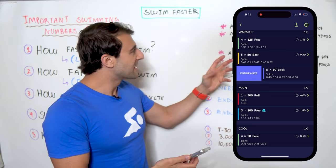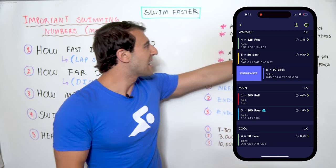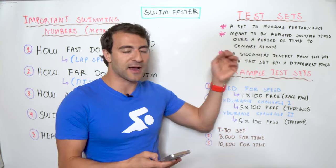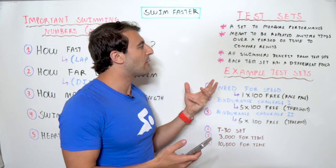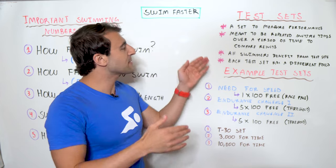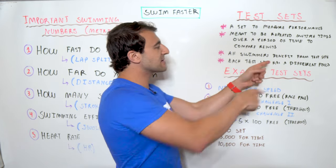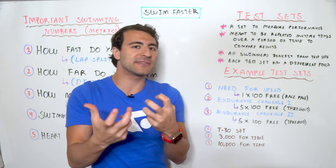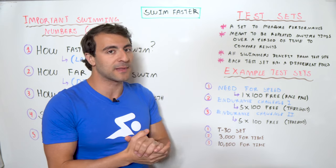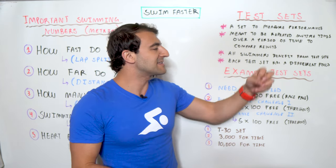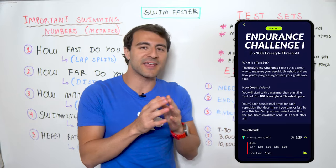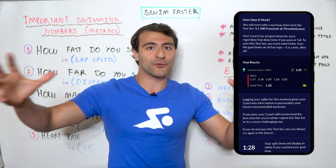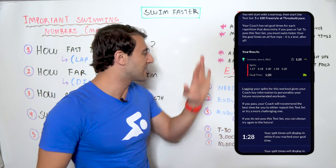Test sets are an important way to measure performance — they're meant to be repeated multiple times over a period of time so you can compare results. Doing a test set once is nice, but the real value comes from doing it repeatedly. All swimmers can benefit from test sets because there are so many kinds: some focused on speed, some on endurance, a specific stroke, or ultra-long-capacity endurance.